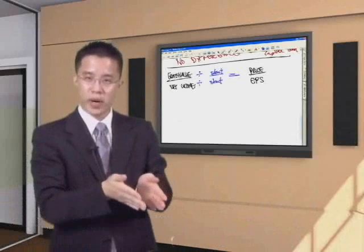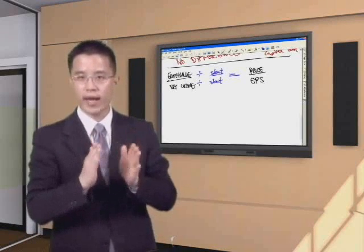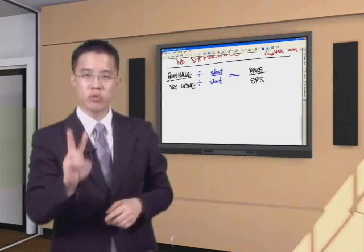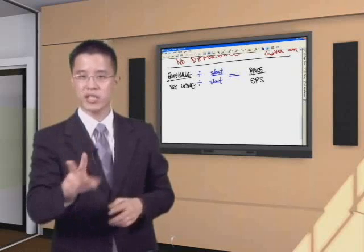Mathematically, financially, algebraically, and conceptually, equity value over net income is the same as price to earnings, your P.E. ratio. But yet, there are two major reasons why they are still going to be different.